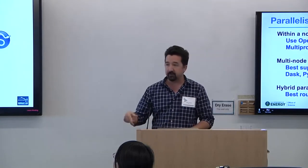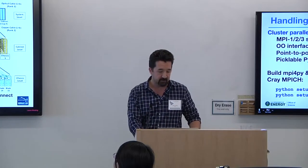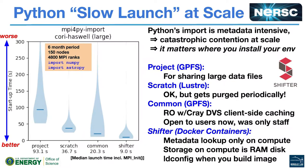You can also do hybrid parallelism — it's the same as submitting any other hybrid parallel job. The only one of these parallel libraries that can really scale to the whole machine is mpi4py. But if you're going to scale to a significant portion of the machine with a Python or hybrid Python/C++ application, you're going to want to do something besides just launching it from your home directory, because of characteristics of our file system.